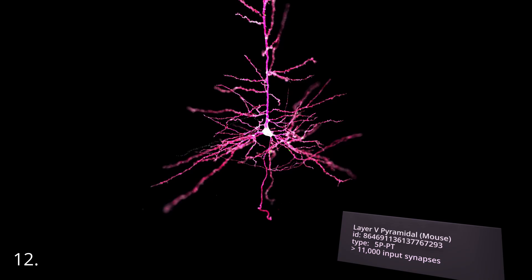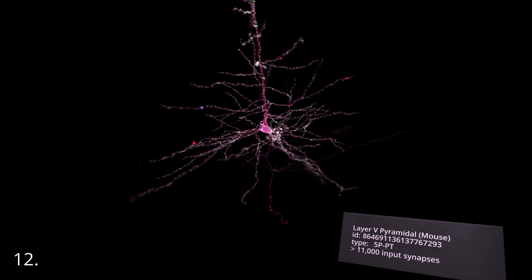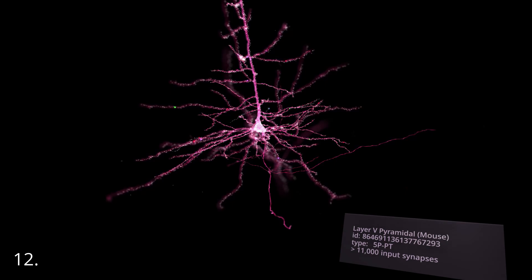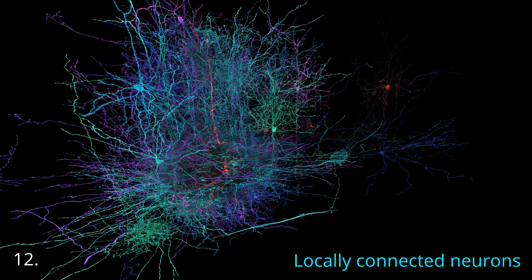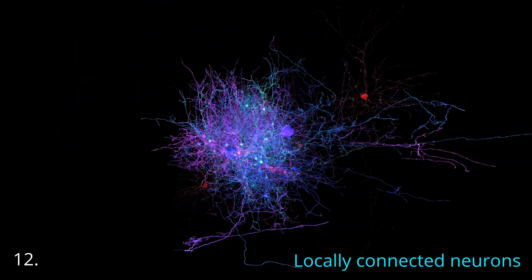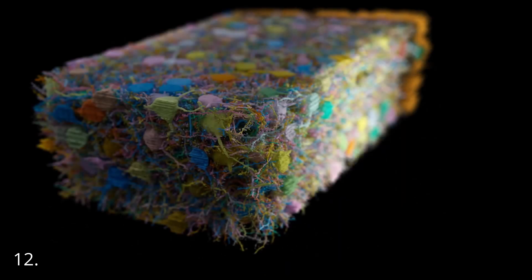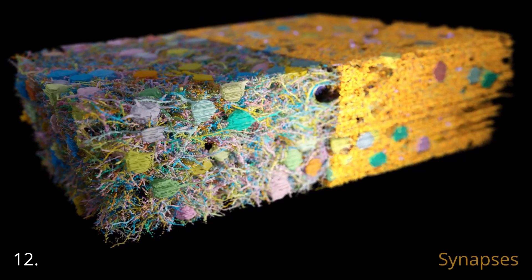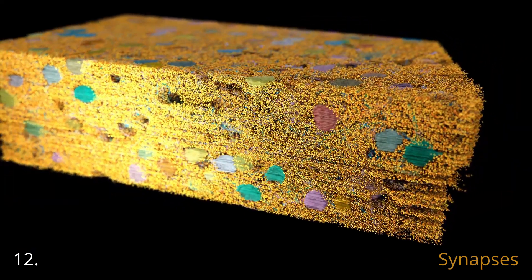The sheer scale of the interconnectivity in a connectome is beyond our intuitions. Consider that an average pyramidal neuron contains input connections from more than 10,000 other neurons. Each of those neurons connects to hundreds or thousands of other neurons. Every neuron in the brain is a node in a dense network of circuits, packed tightly into three-dimensional space—so densely that there can be over 3 million synapses inside the volume of a grain of sand.